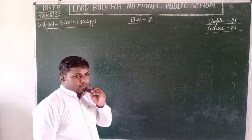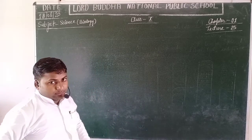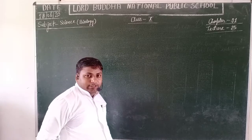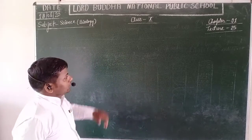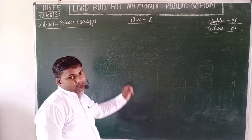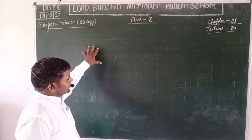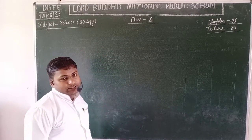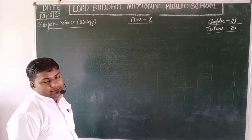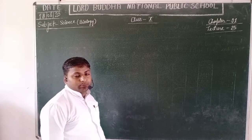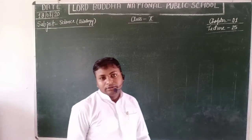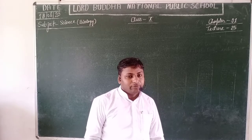Hello students, in the previous lecture we were studying about the internal structure of the human kidney. Now we are going to discuss about the smallest structural and functional unit of the kidney, that is called the uriniferous tubule, or nephron.